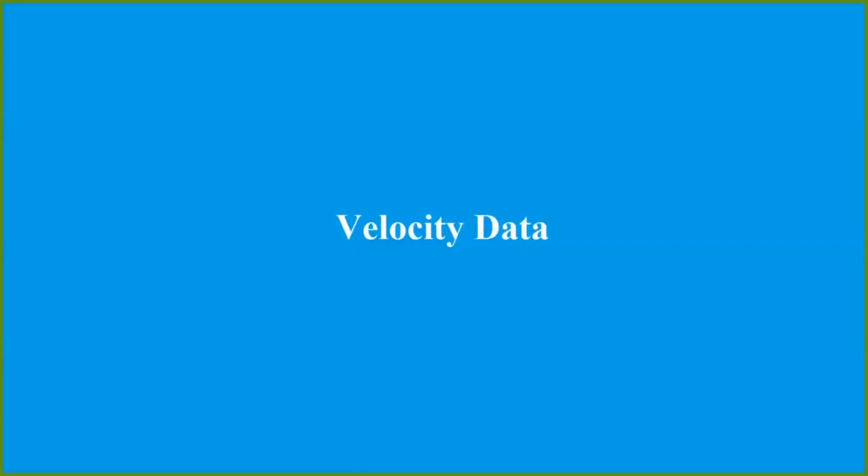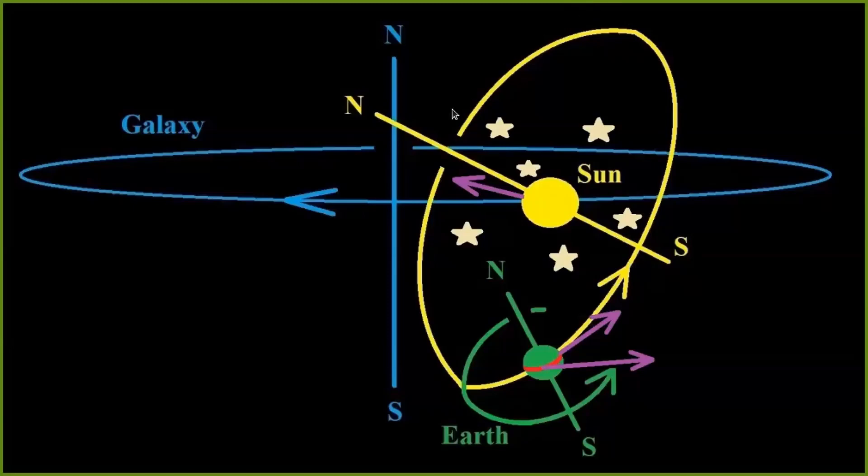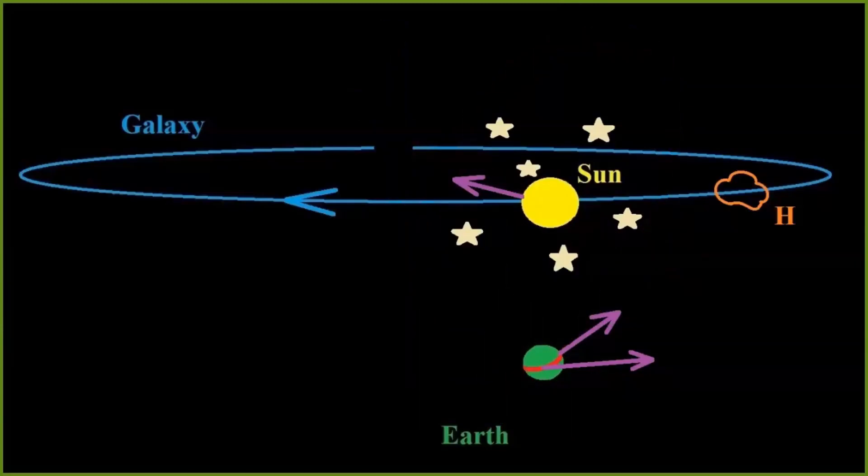That same data includes velocity information. Velocity can get complicated. Consider the sun in its neighborhood of stars all revolving around the galaxy. At the same time, the earth is revolving around the sun once a year, and the earth is rotating around its north-south axis once a day. Those three motions can be calculated and removed from consideration, leaving only the velocity of the hydrogen gas with respect to the neighborhood stars.